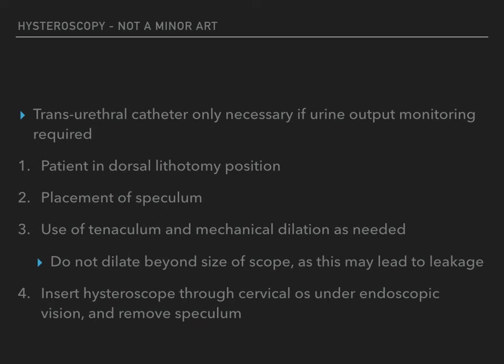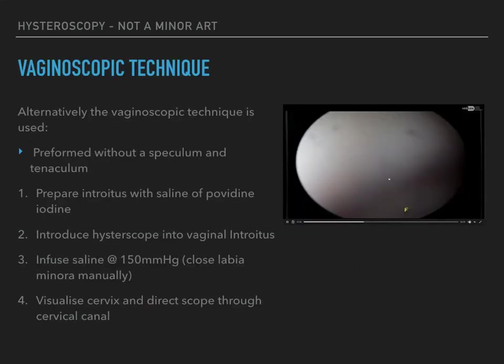A transurethral catheter is only placed when intensive monitoring of urine output is necessary, for example with prolonged procedures with excessive fluid absorption. The initial steps for all hysteroscopic procedures are the same as for other transcervical procedures. The patient should be positioned in dorsal lithotomy, the speculum is placed, and a tenaculum and mechanical dilation used as required. The cervix should not be dilated beyond the size of the hysteroscope, since this may lead to leakage of distending medium. Next, the hysteroscope is inserted through the cervical os under direct vision and the speculum is removed. Some experts advocate an alternative approach — the so-called vaginoscopic technique — particularly for diagnostic procedures.